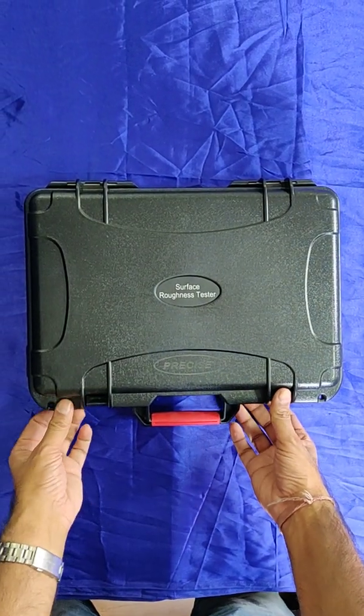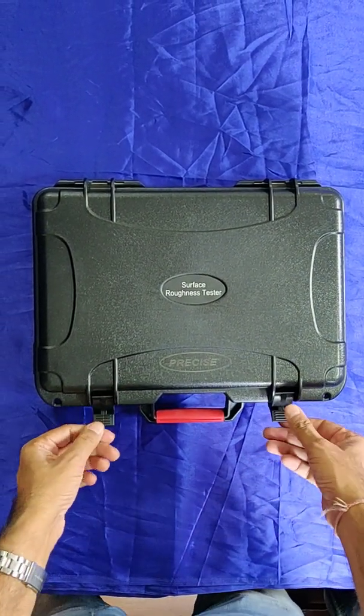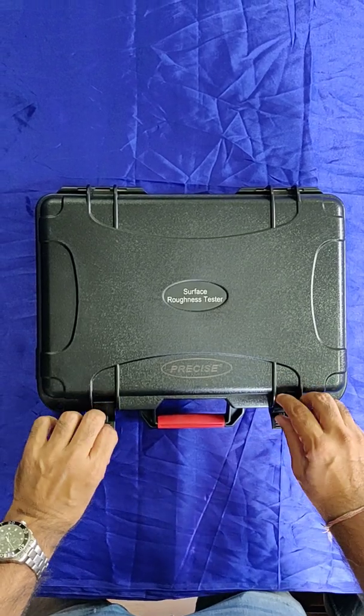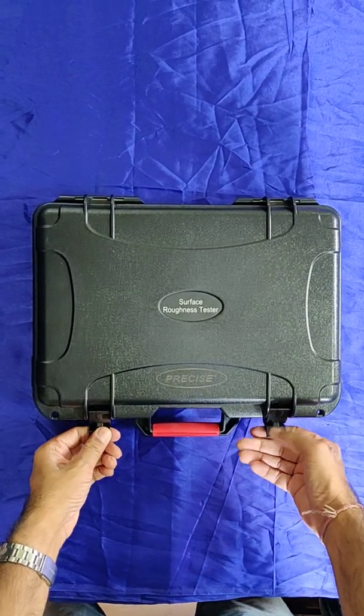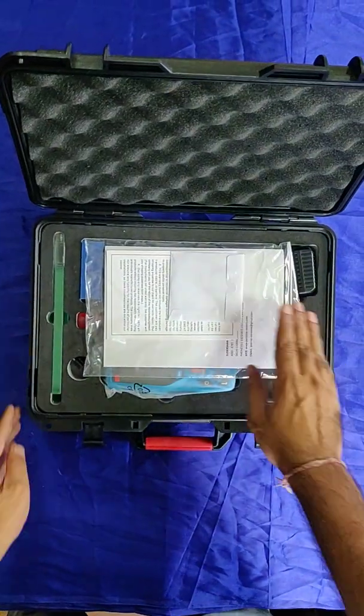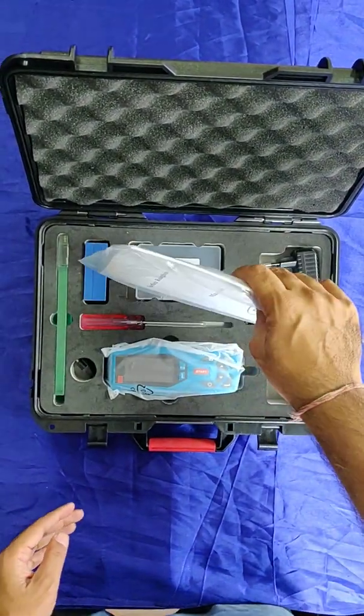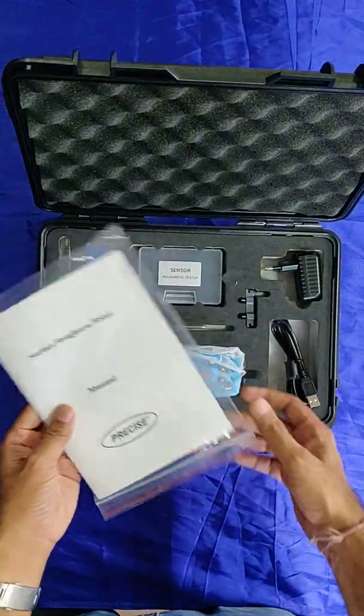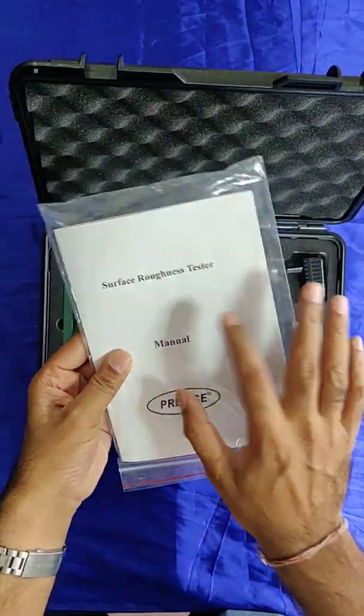Precise Make Surface Roughness Tester TR200 Plus. The plus point about this roughness tester is that it can measure both surface roughness for OD and ID. This is the user manual.